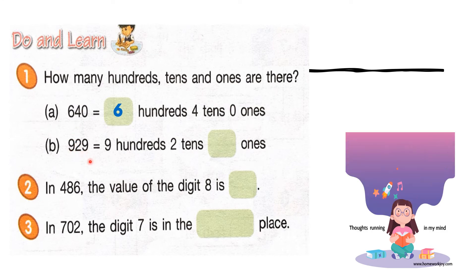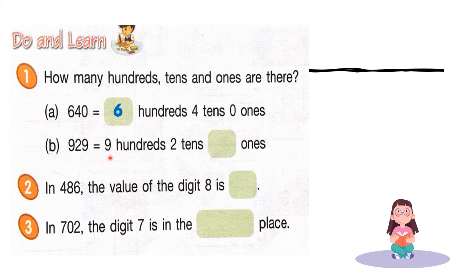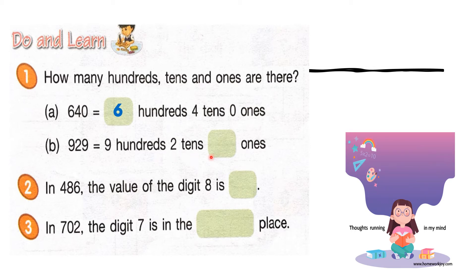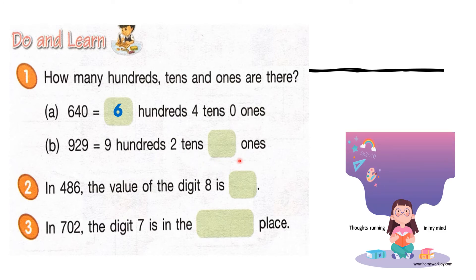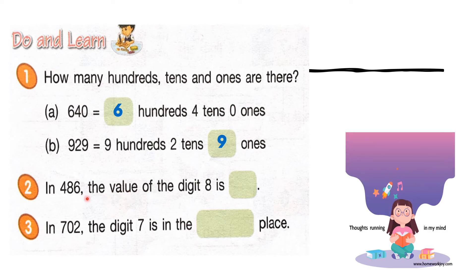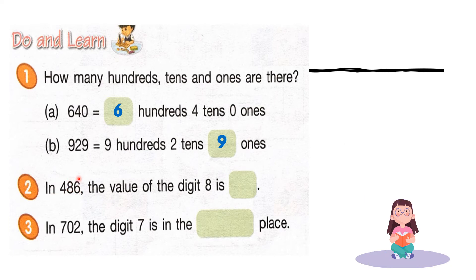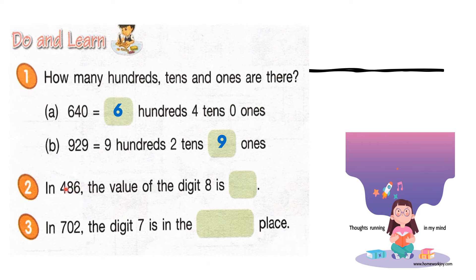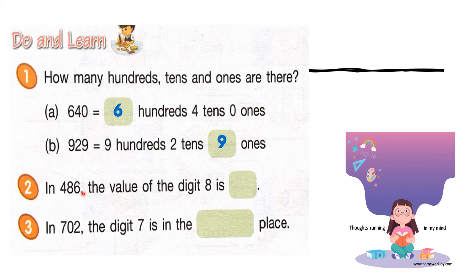In 929, the value of the 100s digit is 9. The tens digit is 2. What is the value of 1s? The answer is 9. Next, in 486, the value of the digit 8 is — remember, value means you add a 0 for each place: 6 has no zero, 8 has one zero, 4 has two zeros. So the value of digit 8 is 80. It is in the tens place.